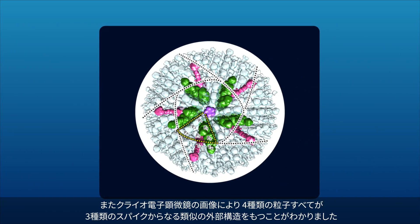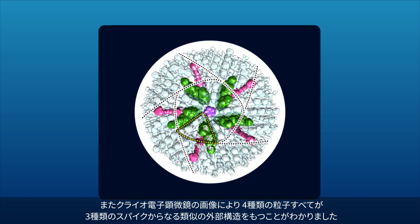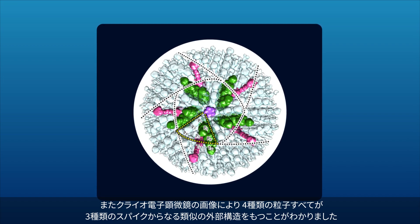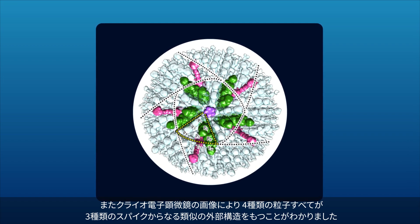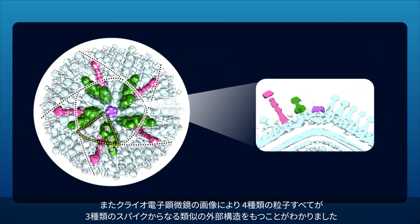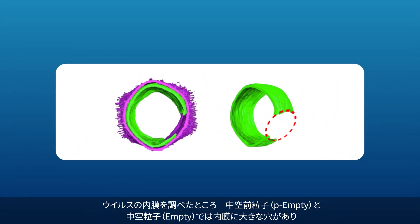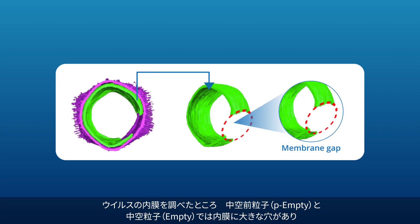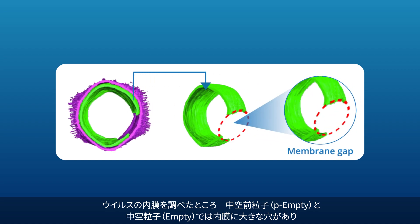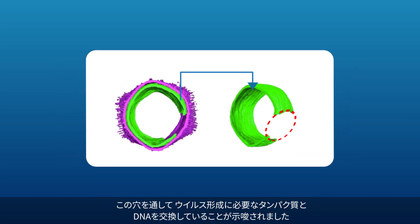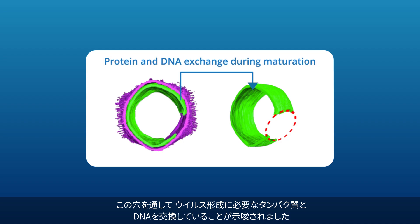Moreover, cryo-EM imaging revealed that all particle types had a comparable outer structure comprising three types of spikes. On examining the internal viral membrane, the team discovered open membrane structures, or membrane gaps, in the P-empty and empty particles, suggesting that the virus uses these gaps to exchange proteins and DNA necessary for maturation.